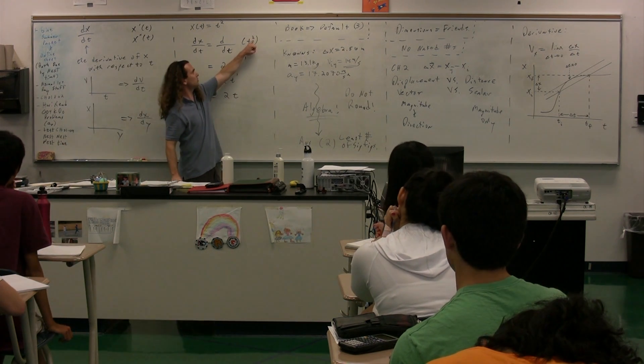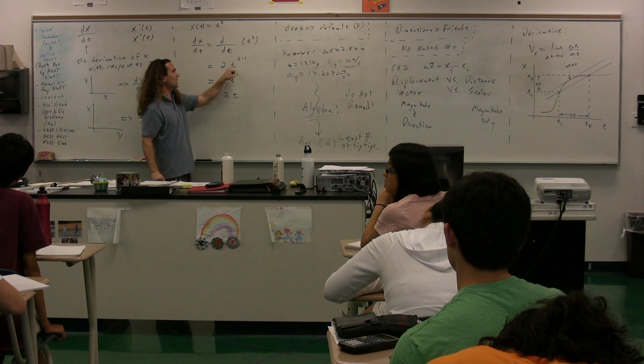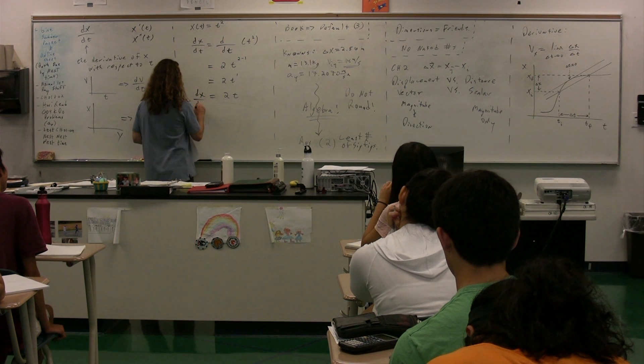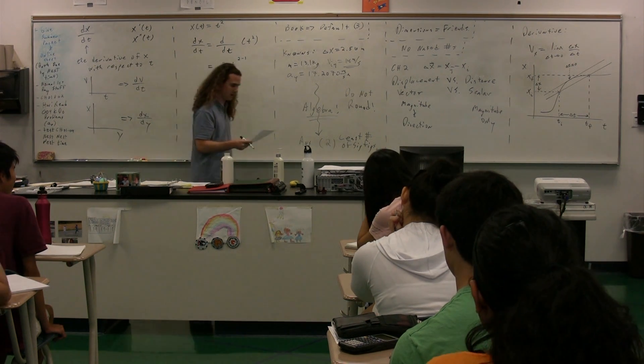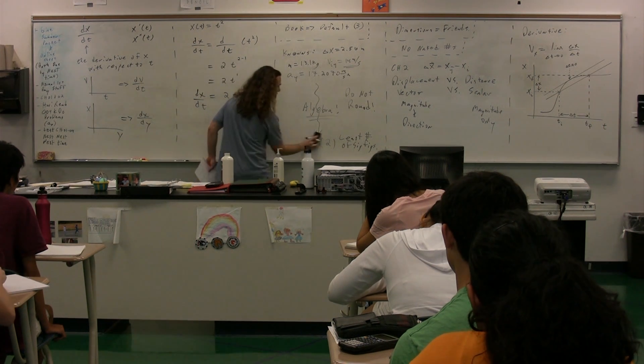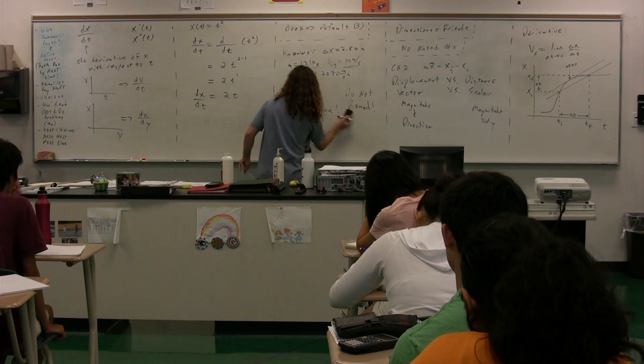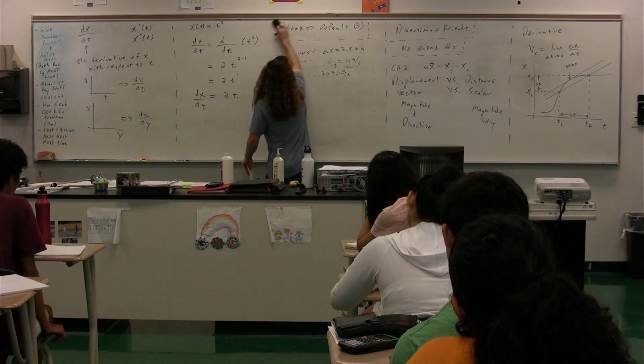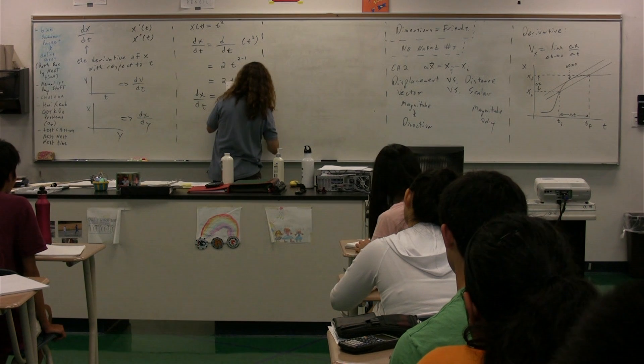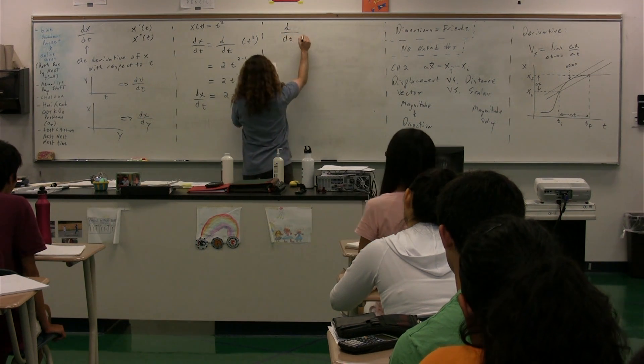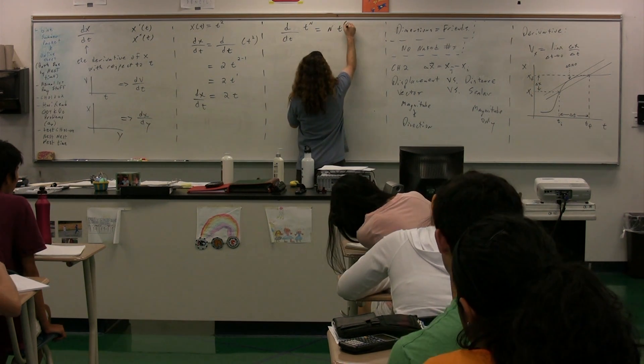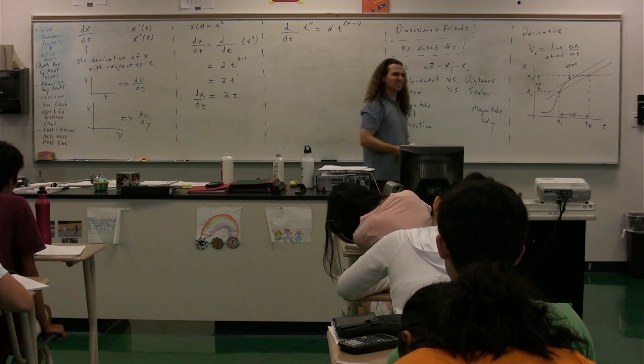Which means it's 2 times t to the first power, which is just 2 times t. So what you do is you multiply by the 2 and then you subtract 1 from it. And this is the derivative of x with respect to time. The derivative of position as a function of time. So the actual definition of that would look like this. The derivative with respect to time of t to the n power is going to be equal to n times t to the n minus 1. So that's the definition.